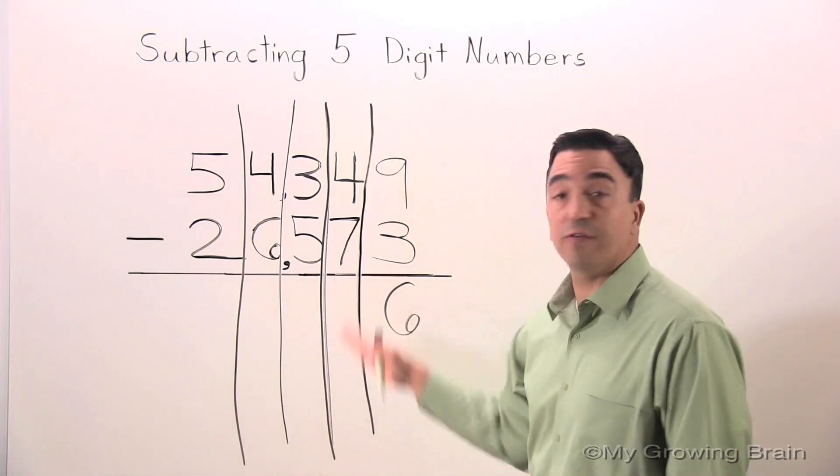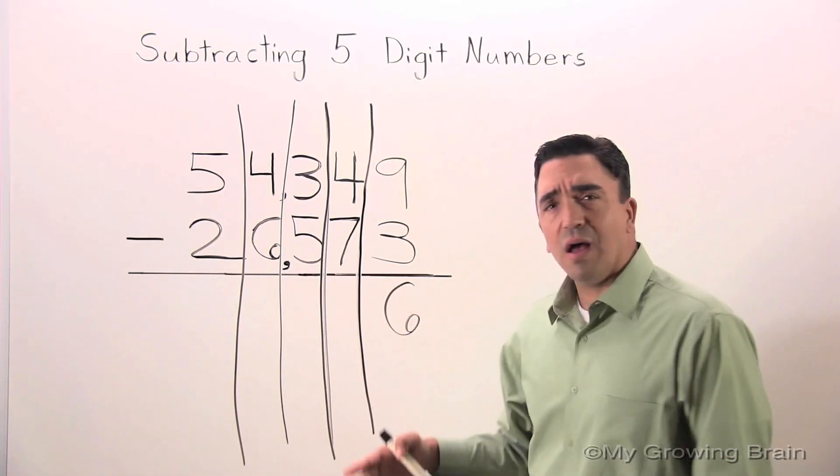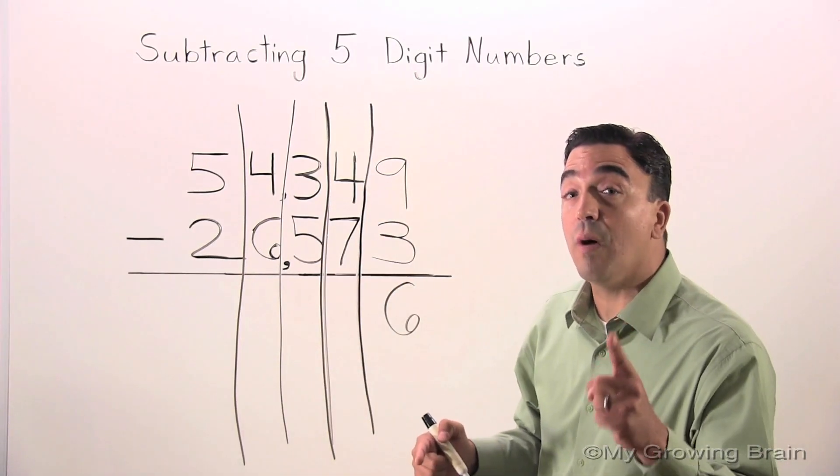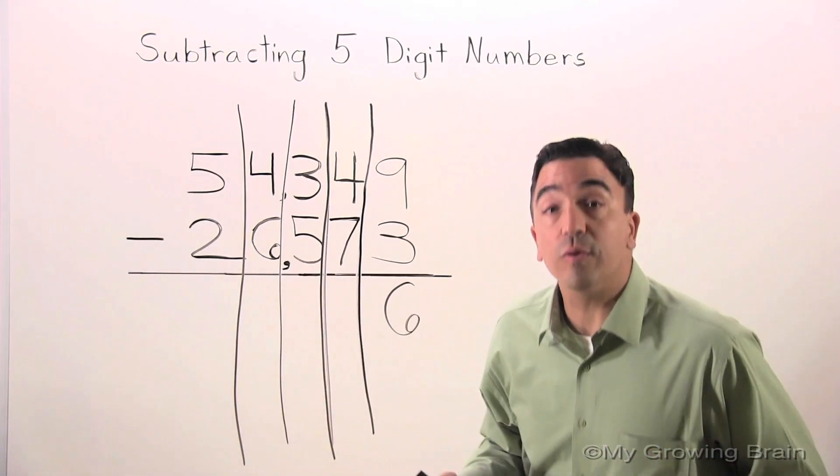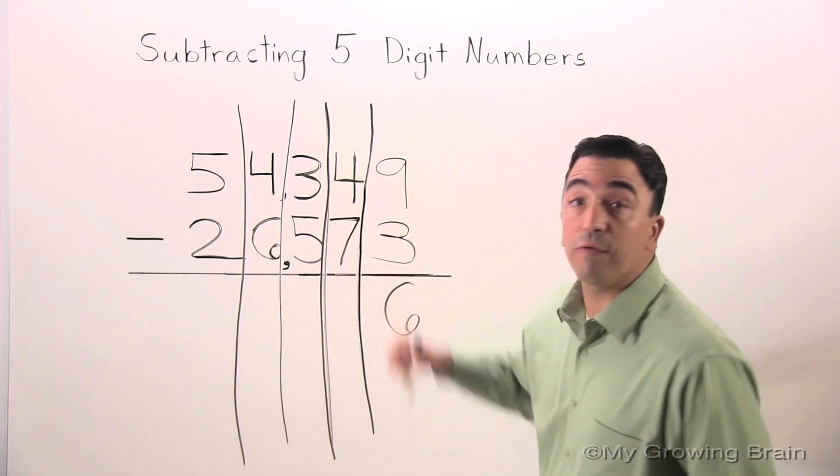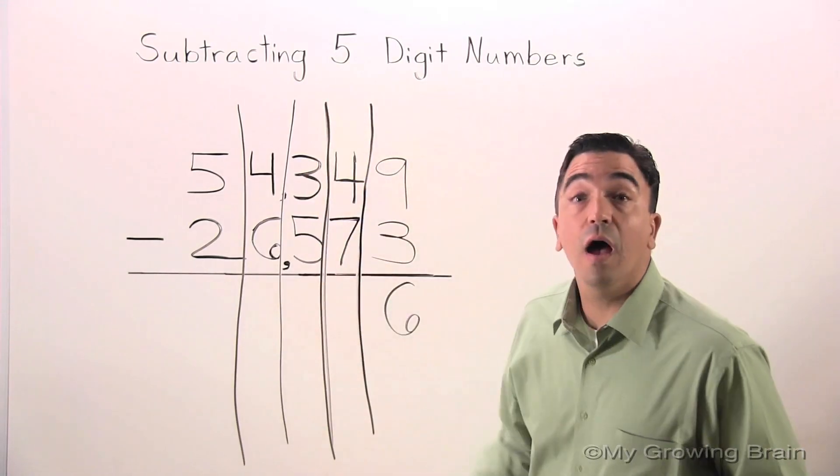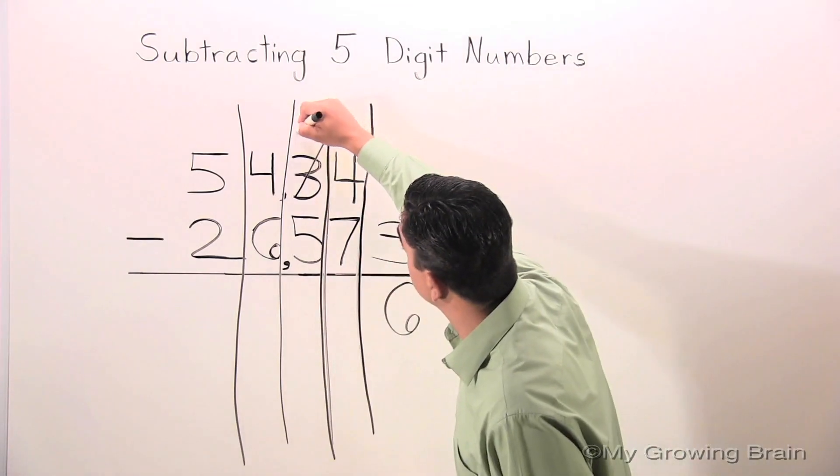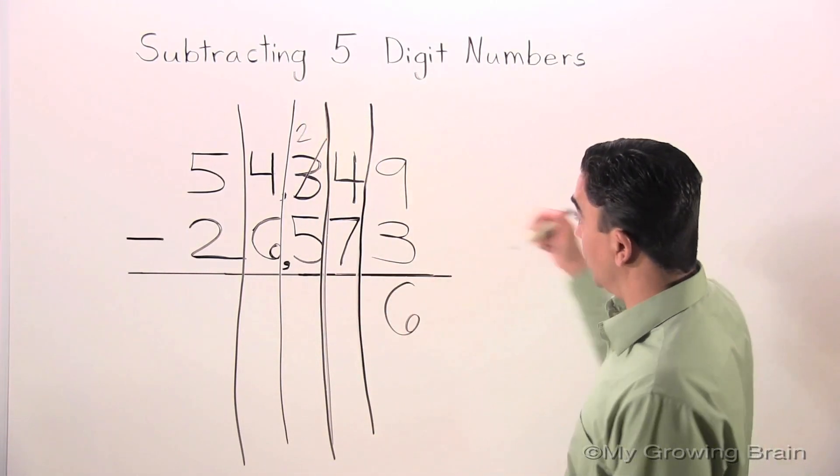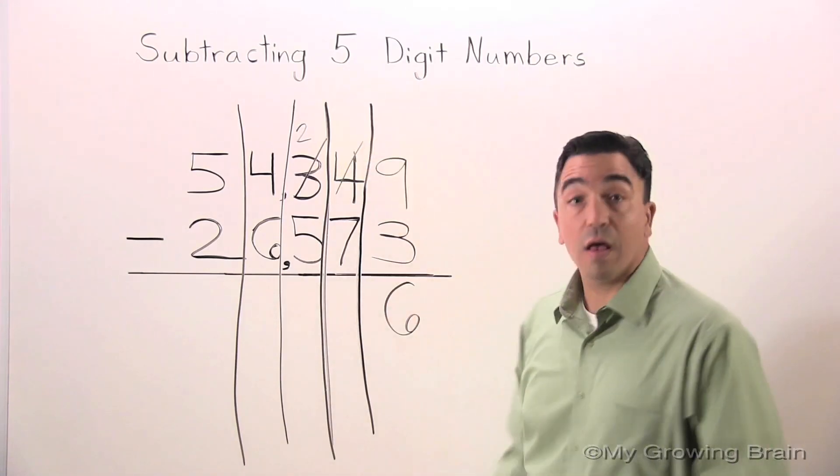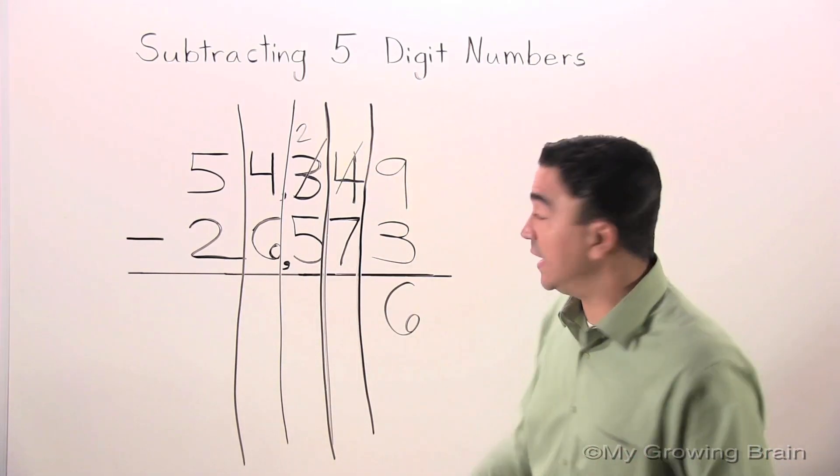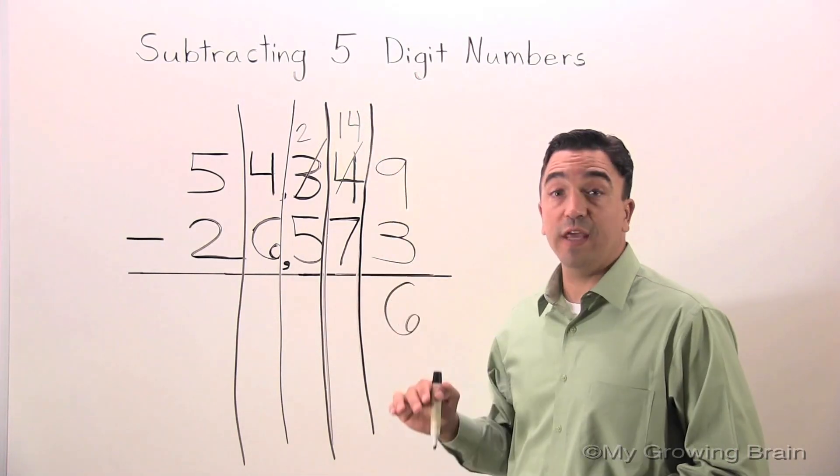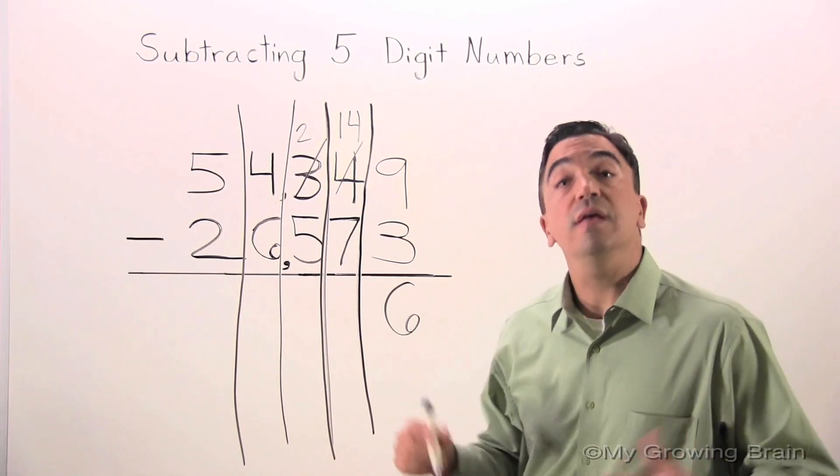Next, I will go to the tens place. Uh-oh, I can't subtract seven from four. Therefore, I'm going to need to borrow or regroup from the three in the hundreds place. Take away one, we have two. Bring it over. The four becomes 14. Seven from 14, or 14 minus seven, is seven.